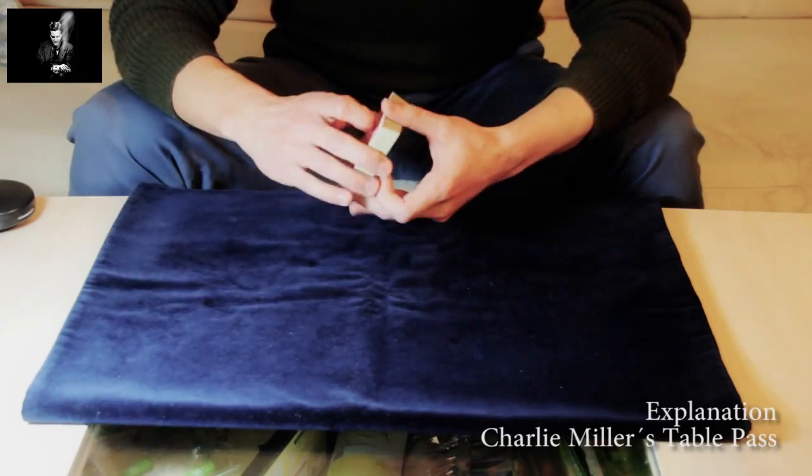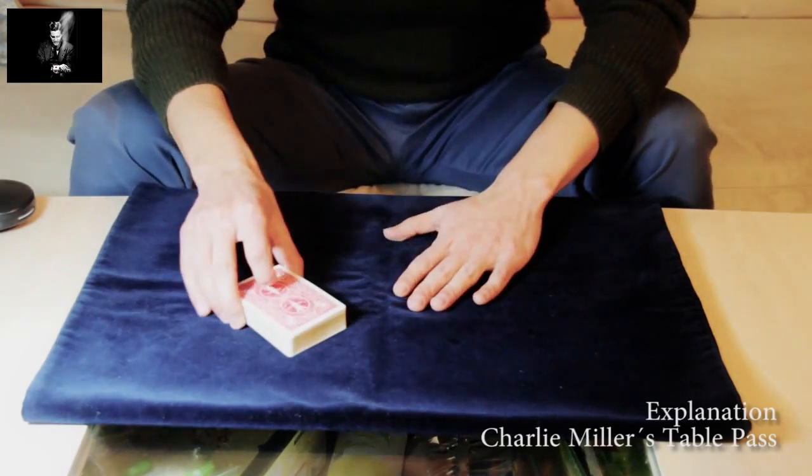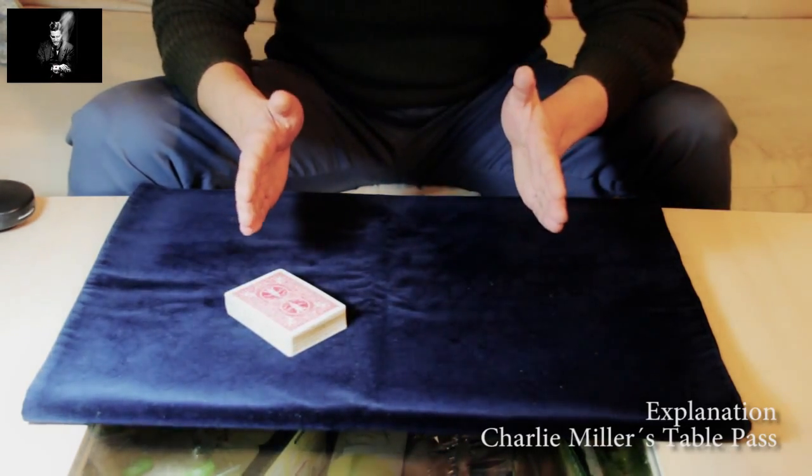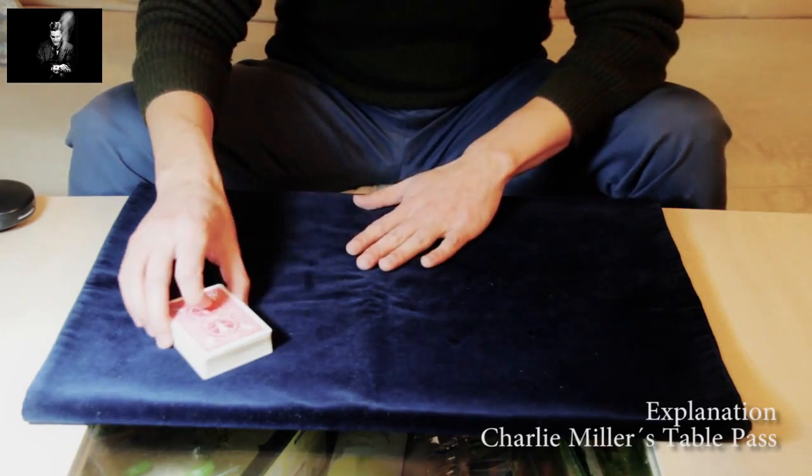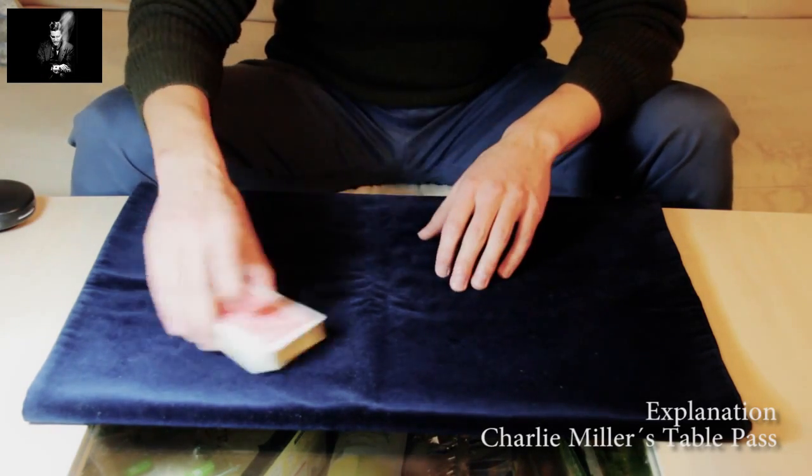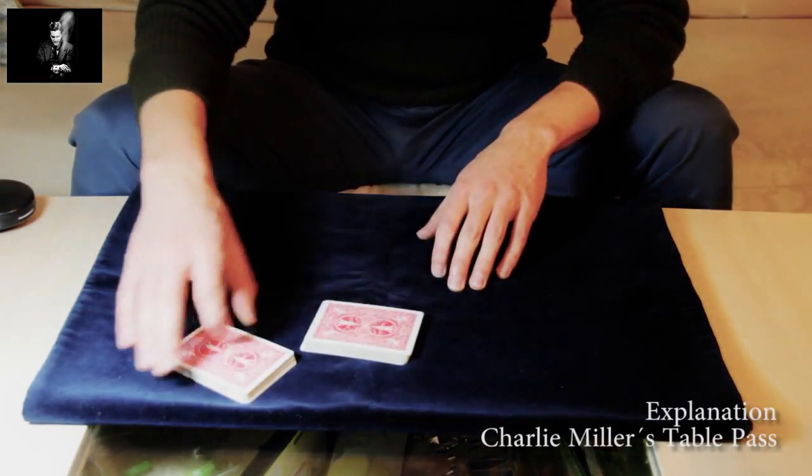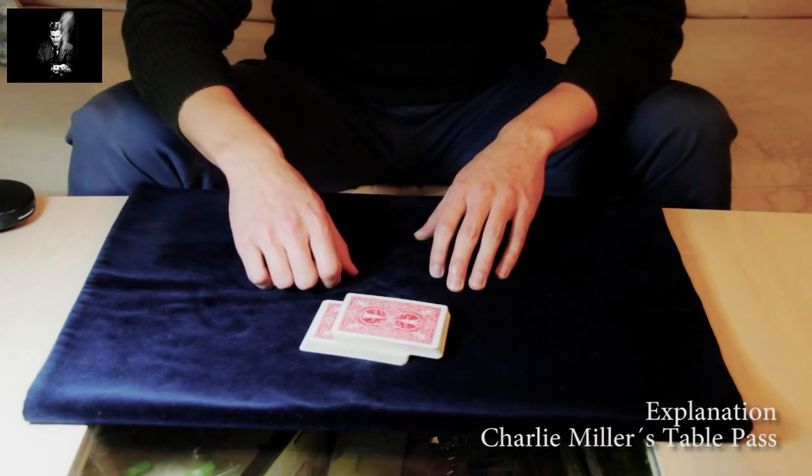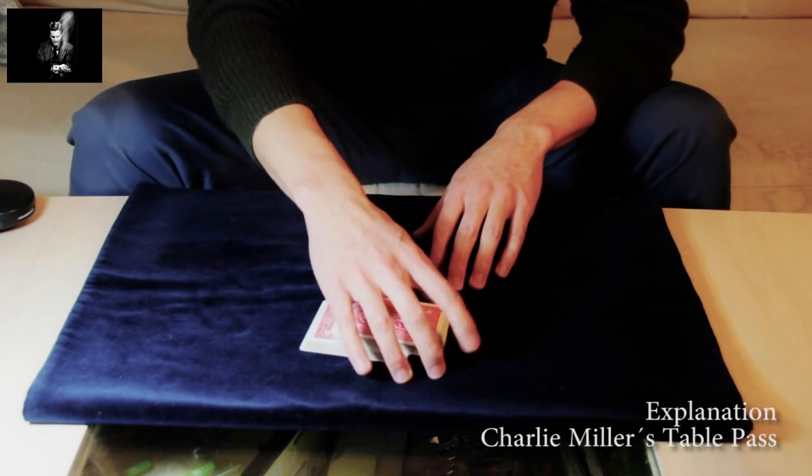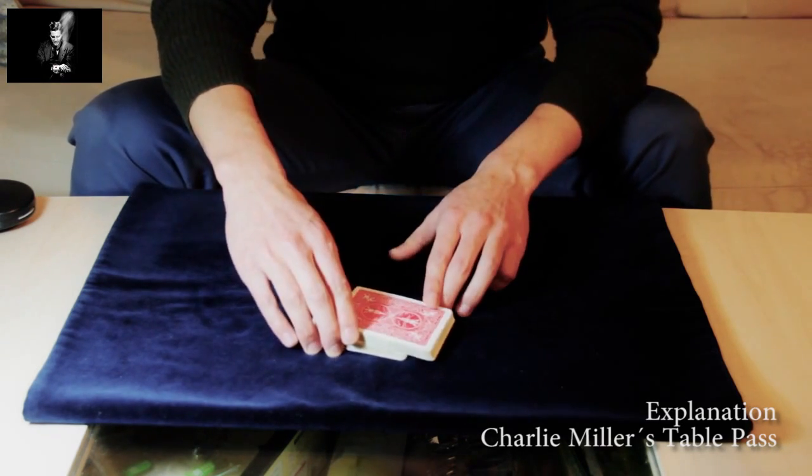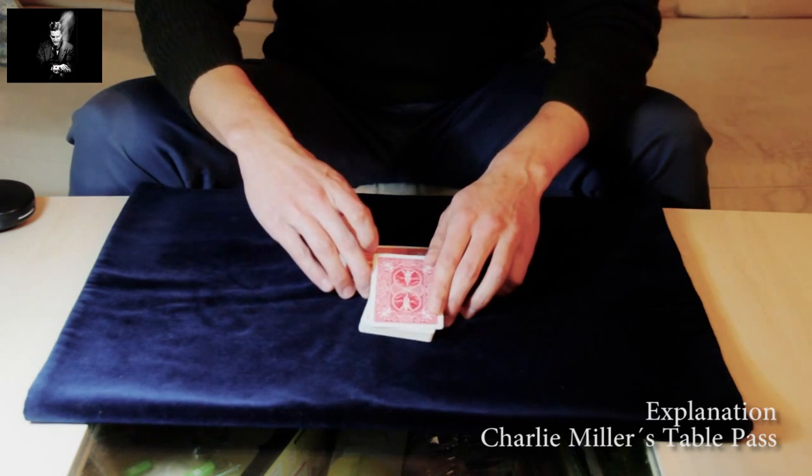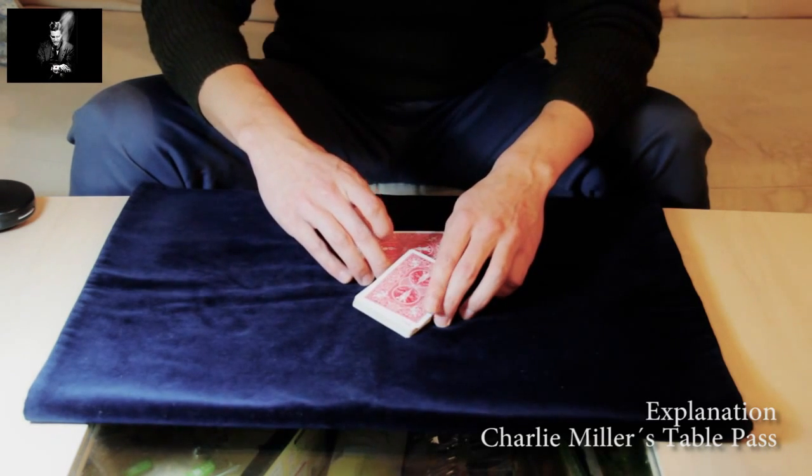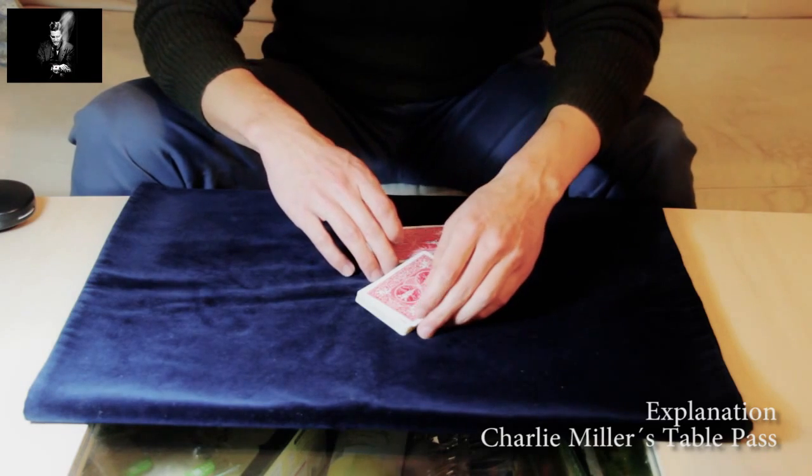So for streamlining this move, first you have to take into account the angle. When you take it straight, they will see pretty clearly that you are outjogging, and they will also see that you are pivoting both packets separately.